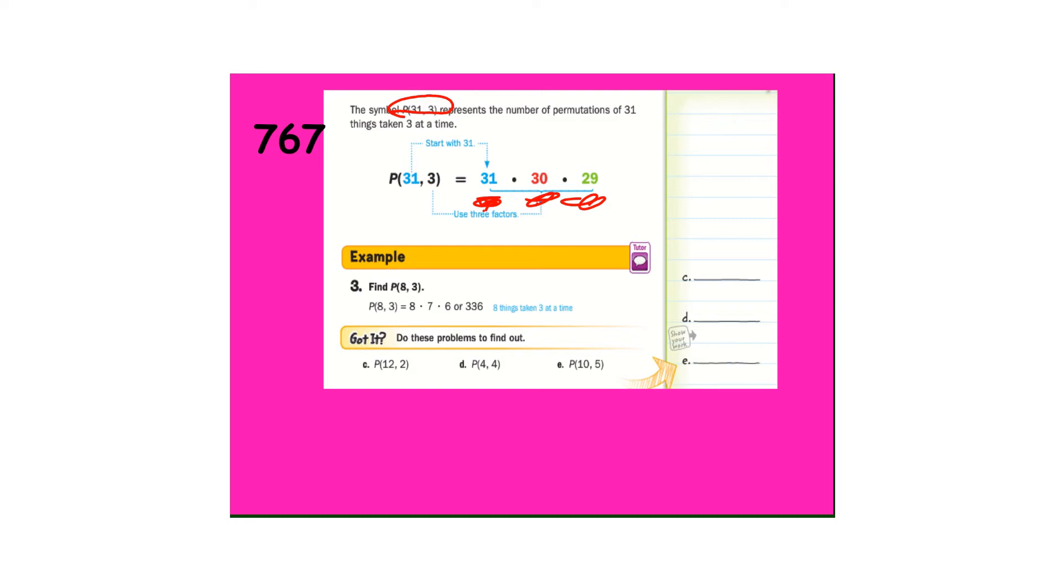Okay. Permutation 8, three. Three spots. One, two, three. Start with the eight. Eight times seven times six. Letter C. Two spots. 12 times 11. Okay, that's what those mean. Go ahead and finish C and do D and E. Pause the video.